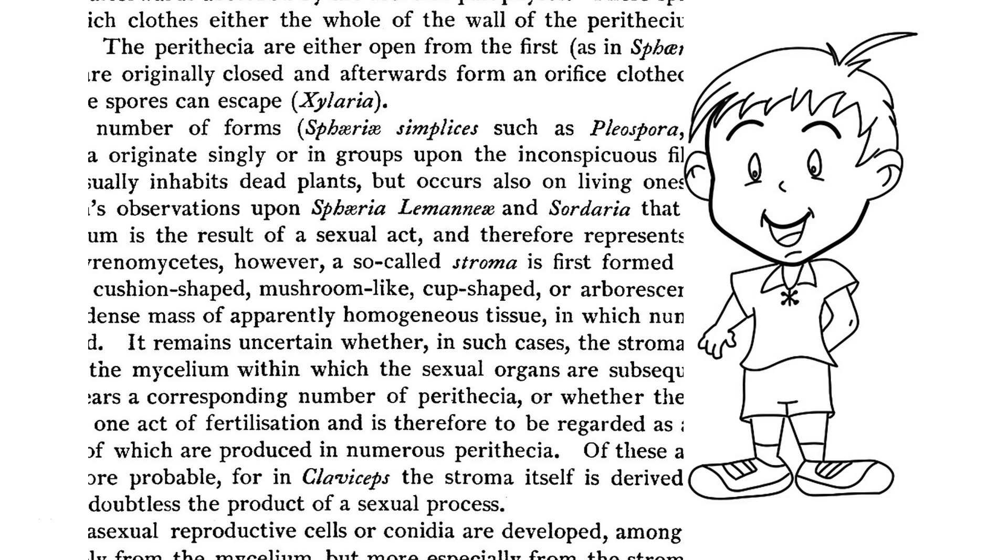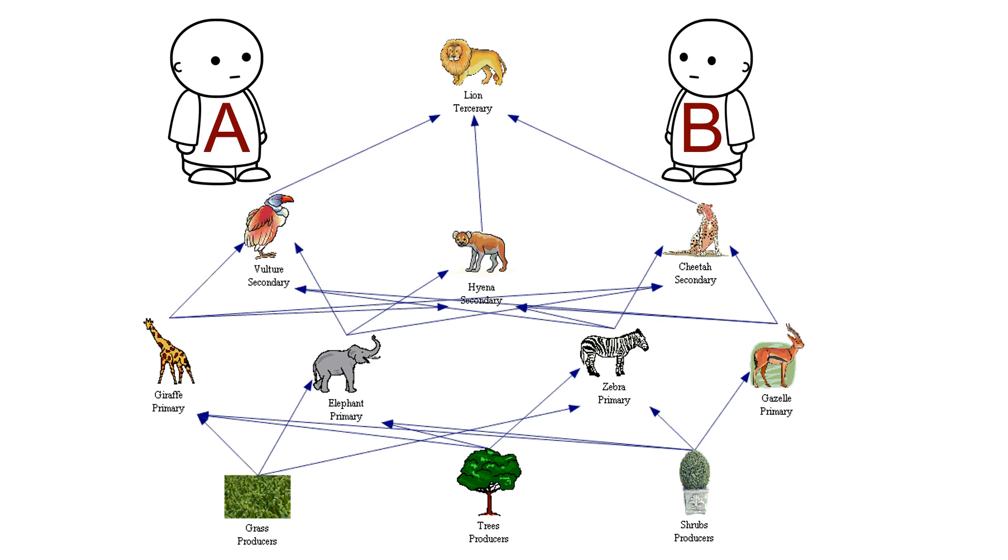Imagine two children learning about the food chain in the Serengeti. Child A has never been exposed to African animal names, whilst Child B has grown up hearing stories about African animals and can easily imagine each when named. They're in her long-term memory.